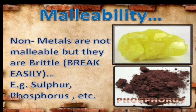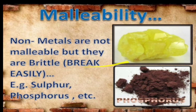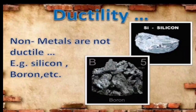First, the malleability property of non-metals. Taking sulphur and phosphorus as examples — non-metals are not malleable, but they are brittle. They break easily. Whenever hammered, they do not come into the form of thin sheets; instead they crush into small pieces. They do not come in the form of thin sheets or wires. Also, many non-metals are in the form of gases.